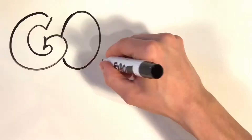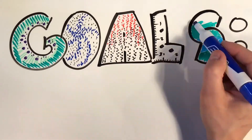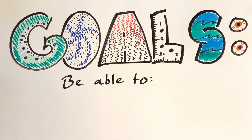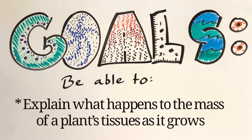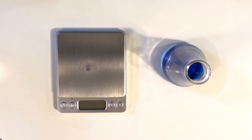Before we go any further, let's consider the goal of this video. After watching this video, you should be able to explain what happens to the mass of a plant's tissues as it grows. Now, we are somewhat limited in our investigation tools — we have BtB and a scale, and that's about it.